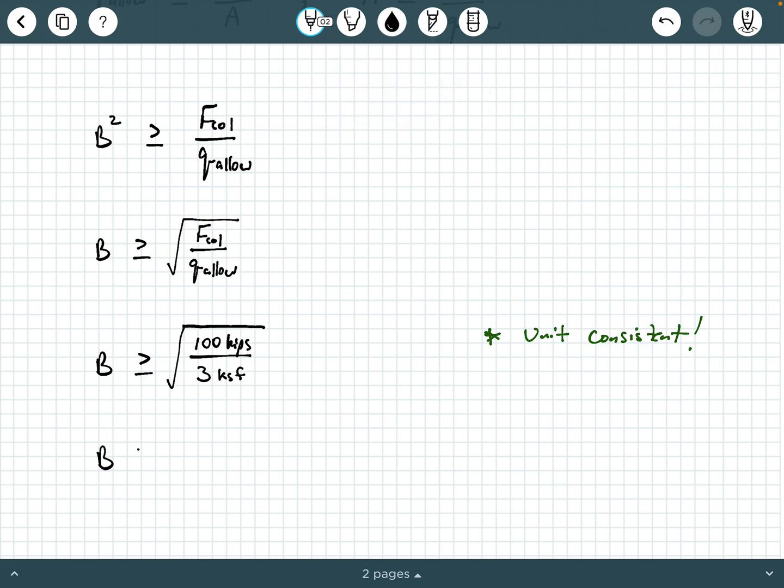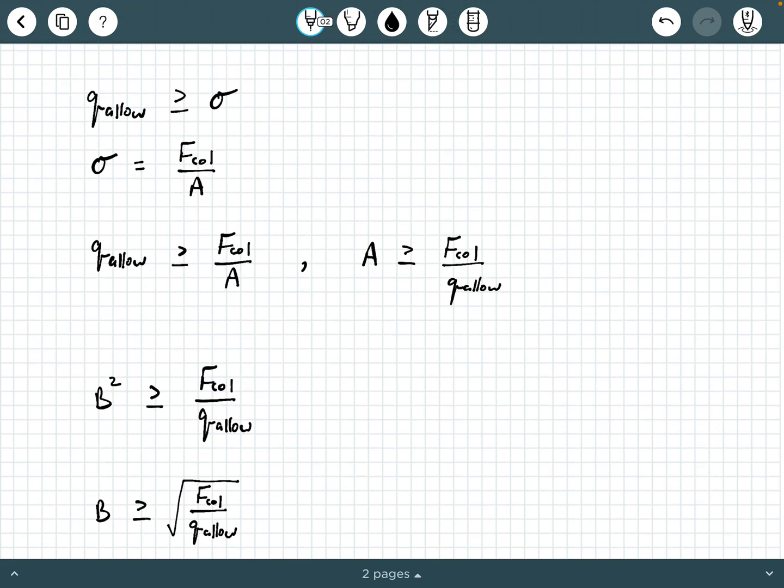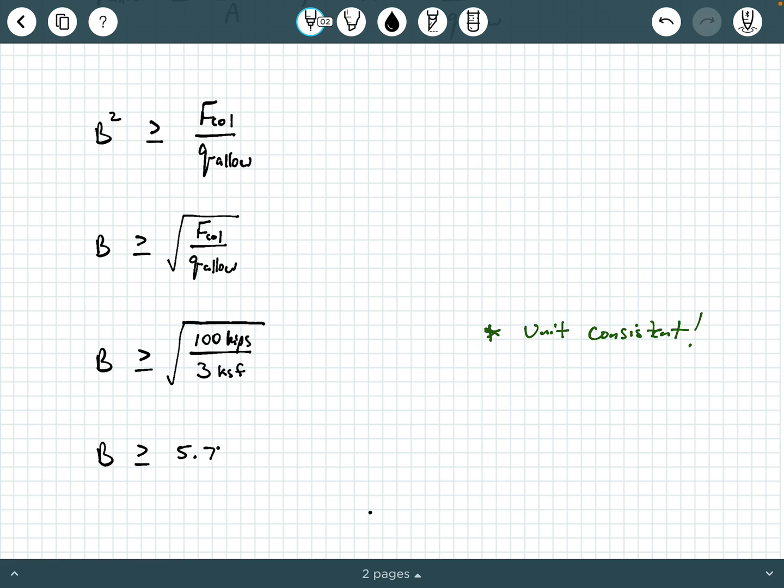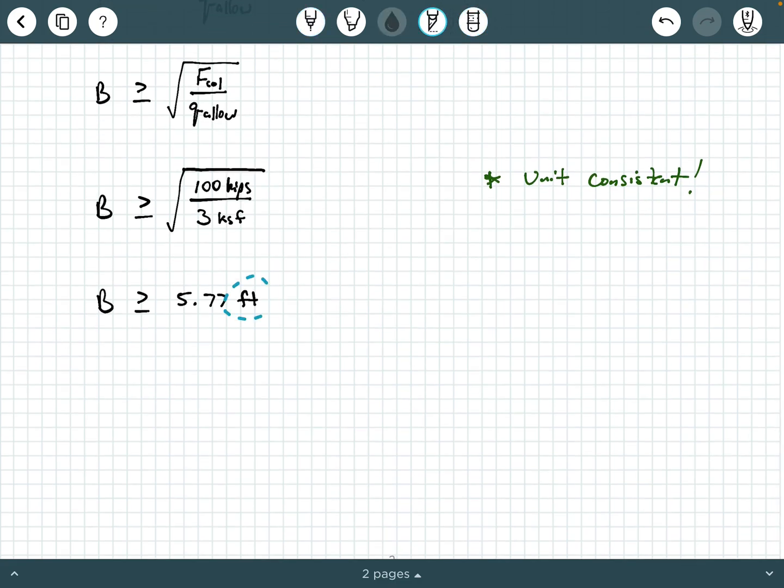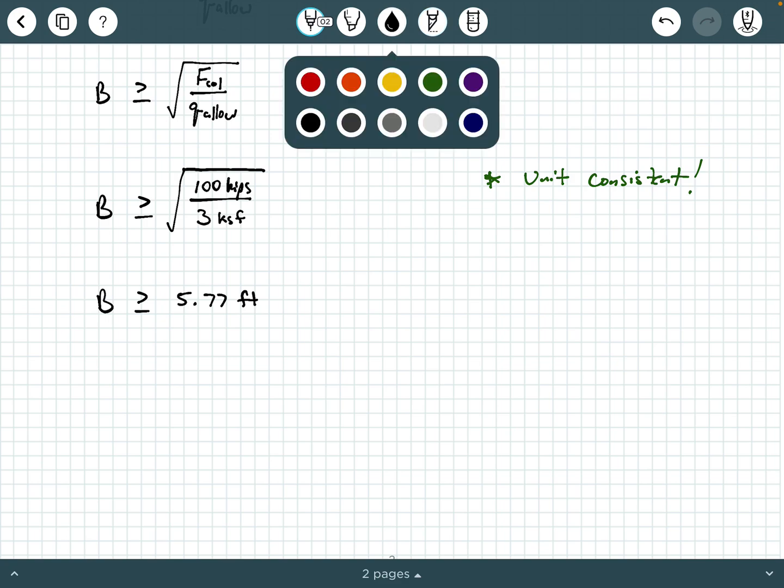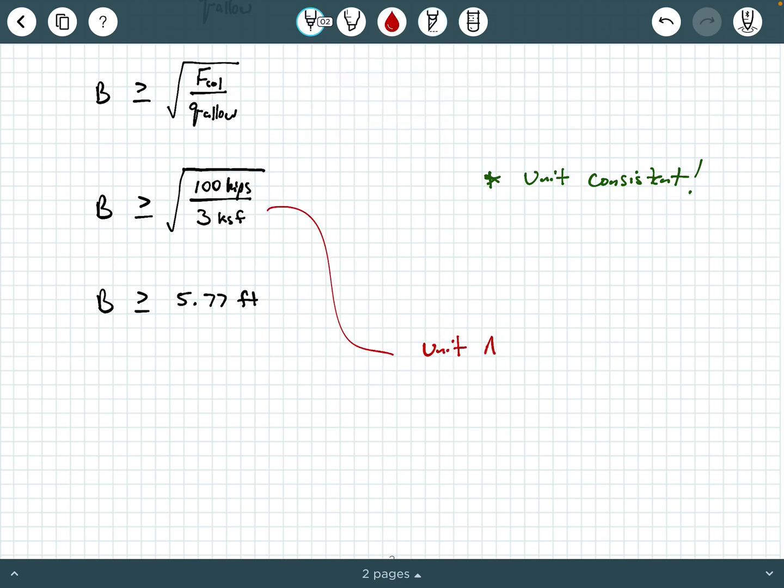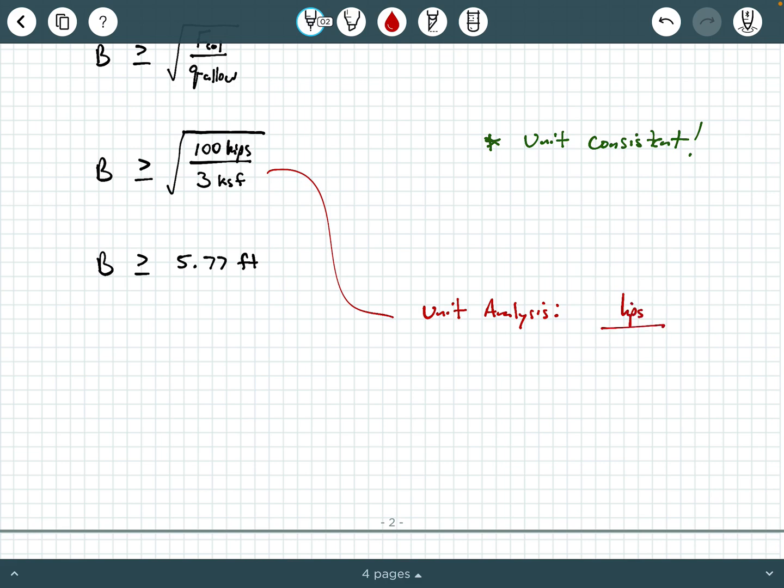So we can punch this through in our calculators. I'm using my Fantastic TI 36X Pro calculator. So we evaluate this. You need to punch this through with me to make sure you know where these values are coming from. But I get B must be bigger than or equal to 5.77 feet. Now, if you're wondering how did these units work out, how did we end up concluding that this has units of feet? Well, we know B is a dimension line that's a length, so we know it should be feet. But how can we get feet out of this square root term?